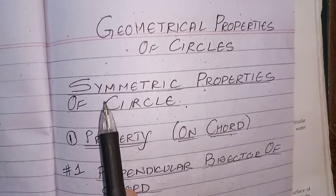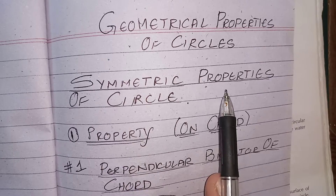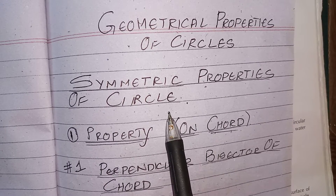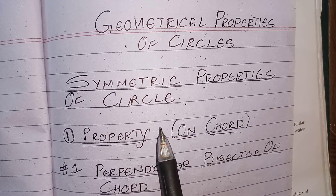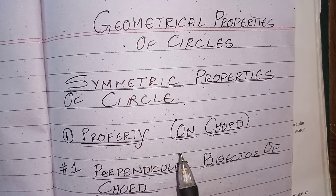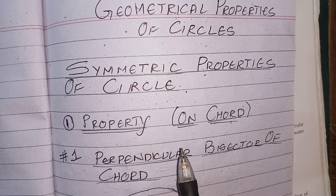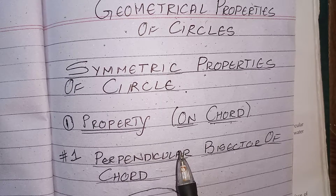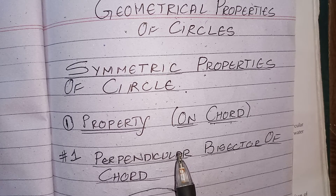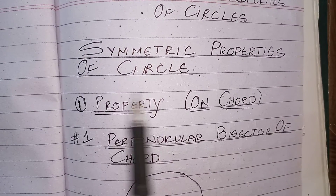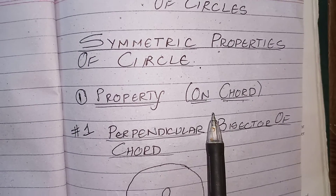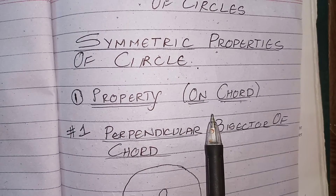Now, symmetrical properties of a circle. There are 4 symmetrical properties — 2 on chords and 2 on tangents. In this video we will talk about the symmetrical properties of a circle that are on chords.